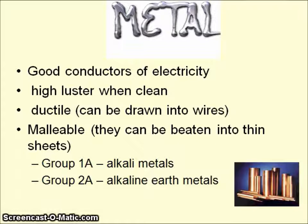The first and most obvious group are the metals. These are good conductors of electricity and have a high luster when cleaned — that's what helps us recognize a metal. They're also ductile, meaning you can pull on them and they'll create wires, like pulling on copper. They're also malleable, meaning they can be beaten into very thin sheets like foil. We have two groups here: Group 1A and Group 2A — these are our alkali metals and our alkaline earth metals. You'll need to know these groups by name, so when asked where the alkali metals are, you should identify Group 1A, and alkaline earth metals as Group 2A.